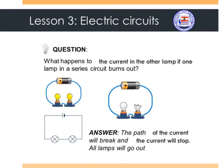Let's imagine that we add a third lamp in this same series circuit. Do you think that the lamps will be this bright? The answer is of course no. Because adding more lamps or more devices in a series circuit will increase the resistance, and therefore the current will decrease and the lamps will burn less brightly — they will be less yellow.